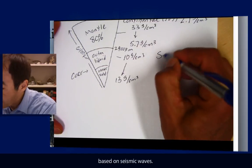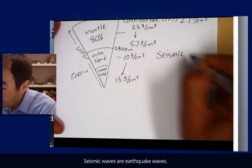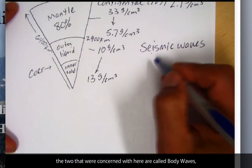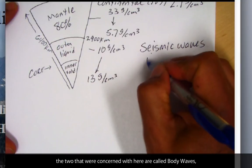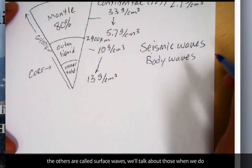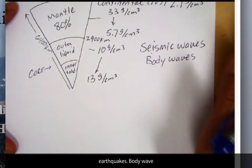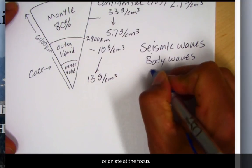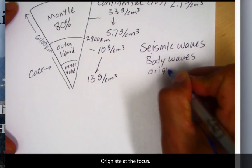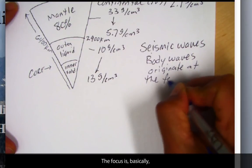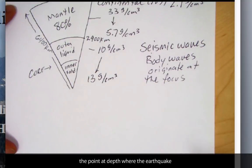Remember, seismic waves are earthquake waves. These are due to earthquakes. And the two that we're concerned with here are called body waves. The other waves are called surface waves. We'll talk about those when we do earthquakes. But the body waves, they originate at the focus. And the focus is basically the point at depth where the earthquake occurs.